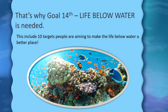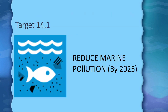Goal 14 includes 10 targets aimed at making life below water a better place. Target 14.1: Reduce marine pollution by 2025. By 2025, we have to prevent and significantly reduce marine pollution of all kinds, in particular from land-based activities, including marine debris and nutrient pollution. Marine pollution happens mostly because of human activities.